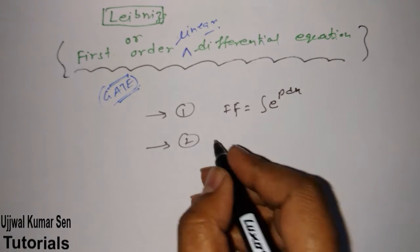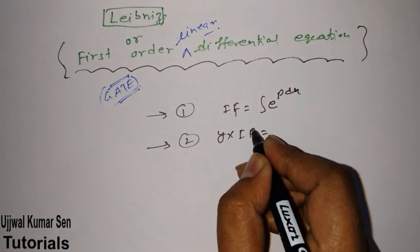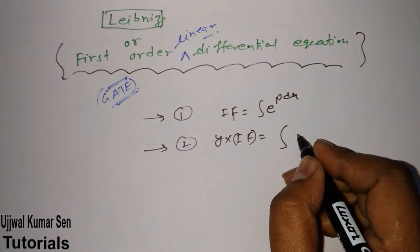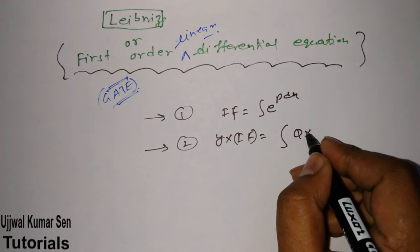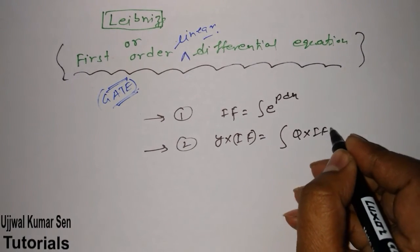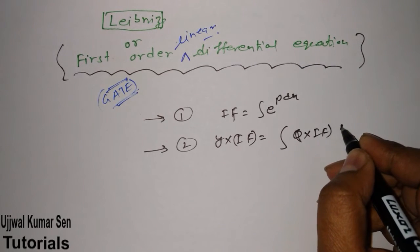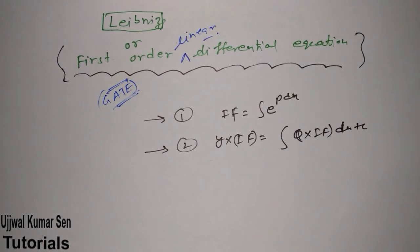Another formula is: y times integrating factor equals integrating factor times Q dx plus C. So in this way, you can solve it.